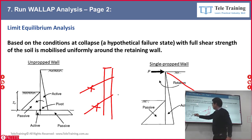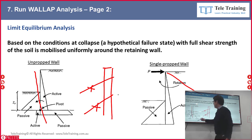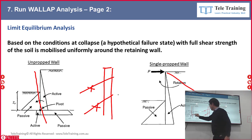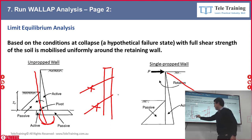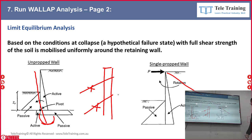When you pass the pivot point, the rotation reverses. The bottom section of the wall actually rotates towards the active side, so that zone becomes passive and the other becomes active — you need to reverse them. This becomes passive and that becomes active. The software handles both sides of this reversal for you.